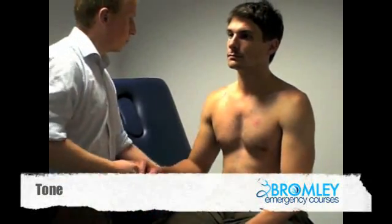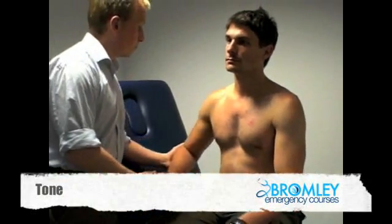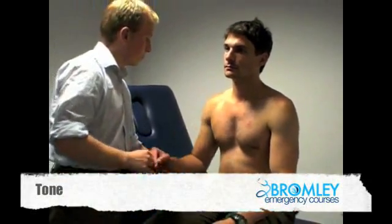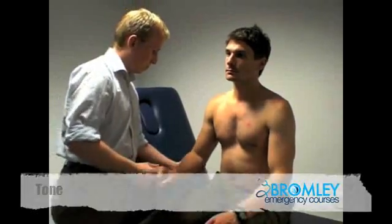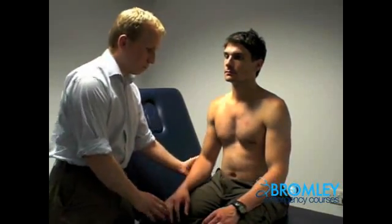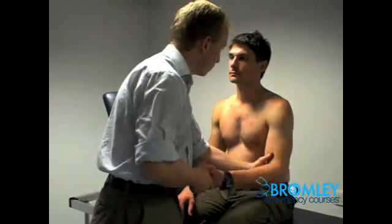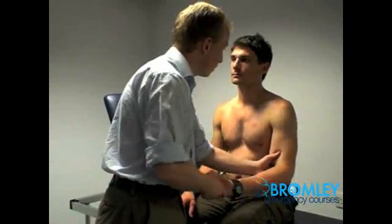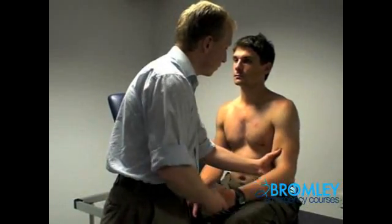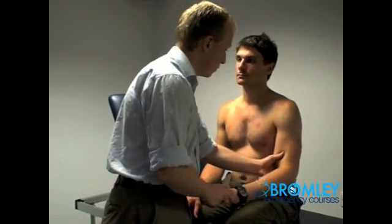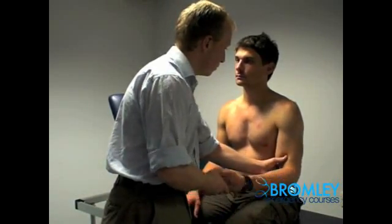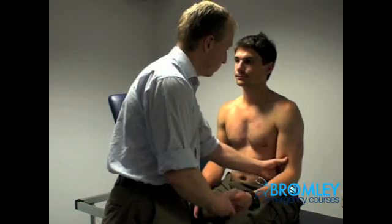We then move on to assessing tone. Do this by passively bending the arm to and fro in an irregular or unexpected fashion, and in the hands by flexing and extending all the joints. Here we're looking for any signs of cogwheel rigidity.